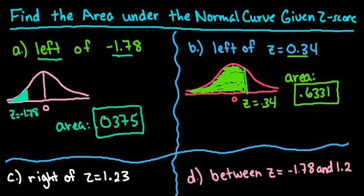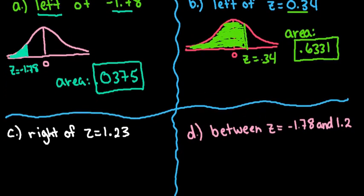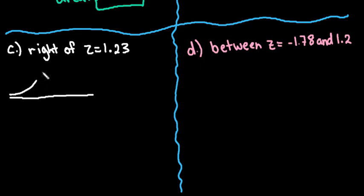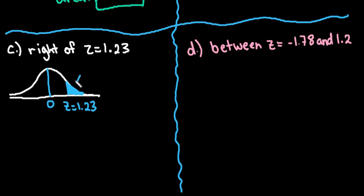The next two problems are more complicated because the table gives area to the left, but now we're looking for the area to the right of a z-score. Drawing a picture: the curve is centered at 0, and z = 1.23 is a little more than one standard deviation above the mean. We're looking for the area to the right-hand side of 1.23.